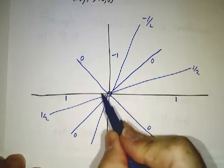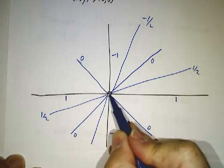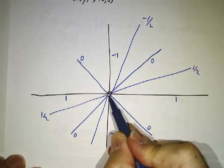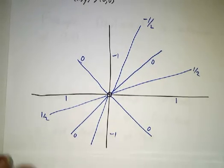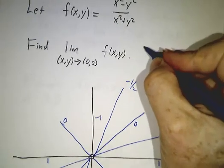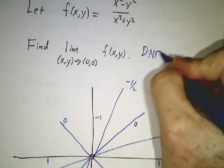So since there are lots of different values close to 0, 0, there isn't any one single limit. This limit does not exist.